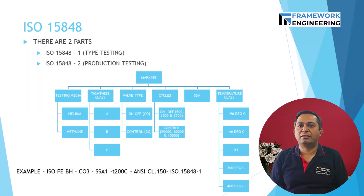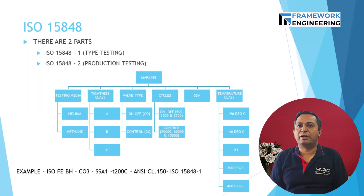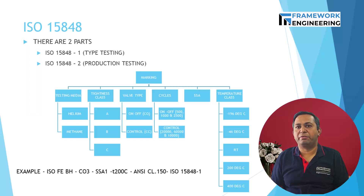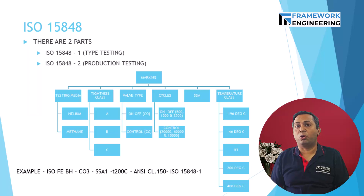In production testing — that is ISO 15848-2 — one valve per valve type, pressure class, and size is considered for testing. A sniffing test is used as per Annexure B of the standard. Test pressure is around 6 bar and the leakage is expressed in PPM. The valve is cycled 5 times and then placed half open to perform the testing. If testing fails, the whole batch is rejected. For tightness: Class A means less than 50 PPM, Class B means between 50 and 100 PPM, and Class C means between 100 and 1000 PPM, for the stem seal. For the body seal, it must be less than 50 PPM for all classes.